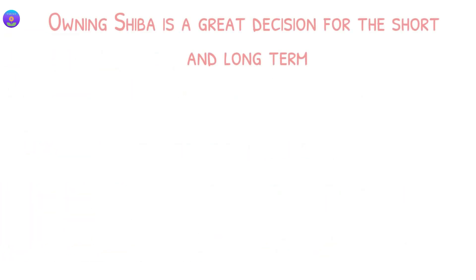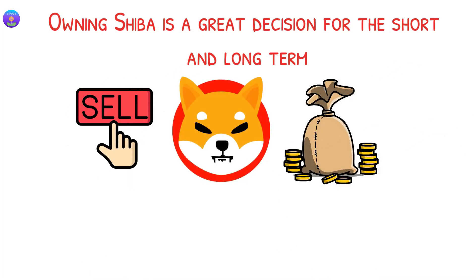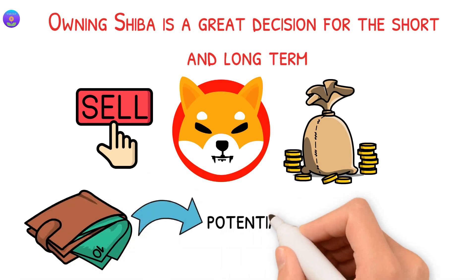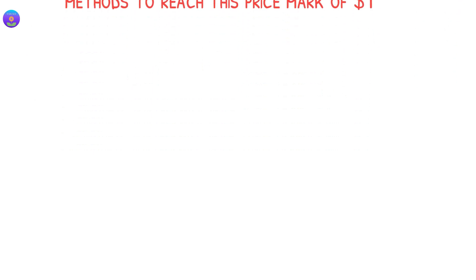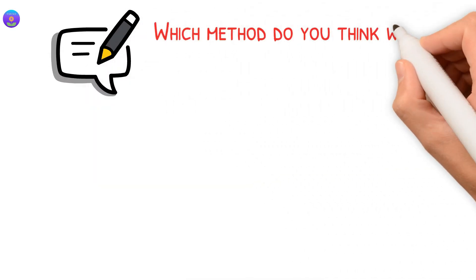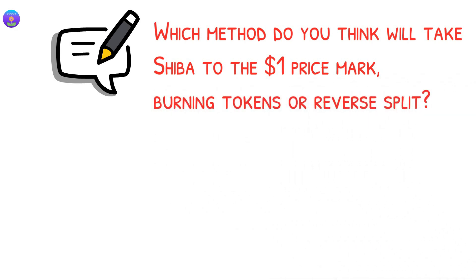Owning Shiba is a great decision for the short and long term. Even if you sell Shiba to cash out some profit, it would be a smart decision if you keep some in your wallet in case of a potential reverse split. Note that I don't say that the team will do the reverse split or not, I just wanted to show you the practical methods to reach this price mark of one dollar. Tell us in the comments section below your opinion. Which method do you think will take Shiba to the one dollar price mark, burning tokens or reverse split?